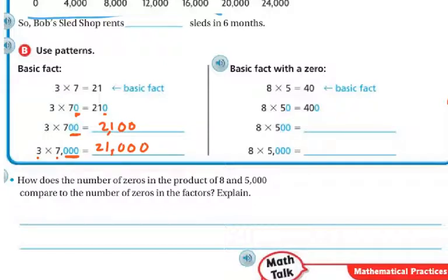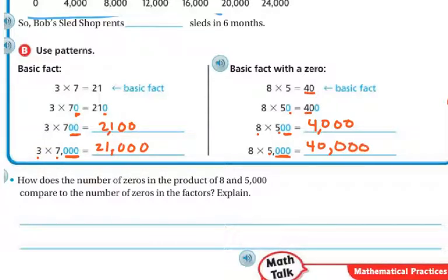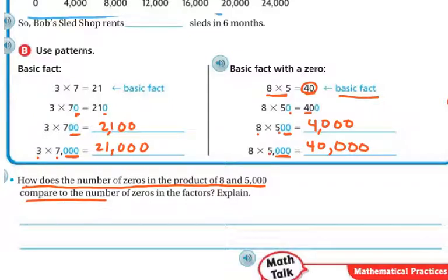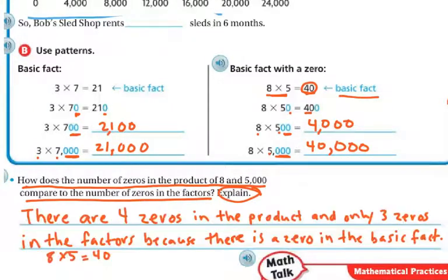And that's my basic fact. So with a 0 in the base fact: 8 times 5 is 40. 8 times 50 — I've got my 40 and I add one more 0. 8 times 500 — I'm adding two more 0s. 8 times 5,000 — I'm adding three 0s. Still follows the same pattern, but remember that original 0 is part of the actual basic math fact. So there are four 0s in the product and only three 0s in the factors, because there's a 0 in the basic fact — and that's why there are more 0s on this side than there are factors.